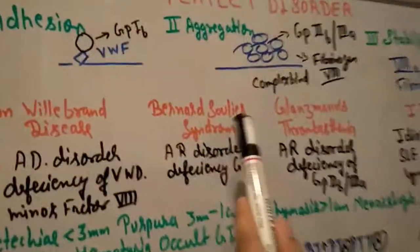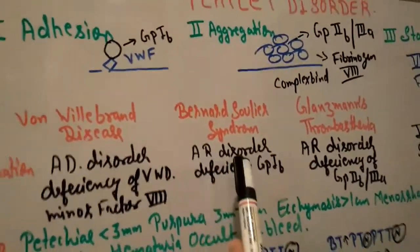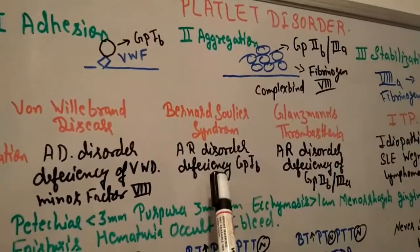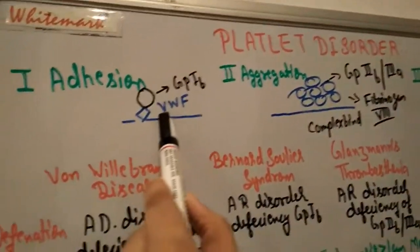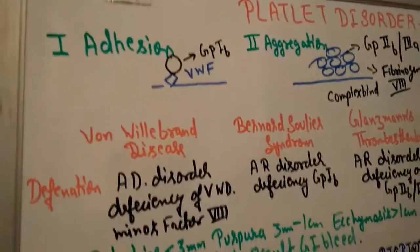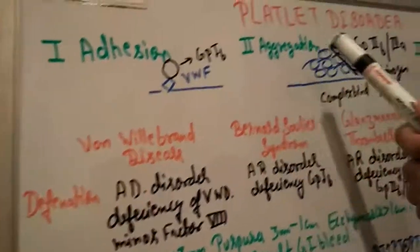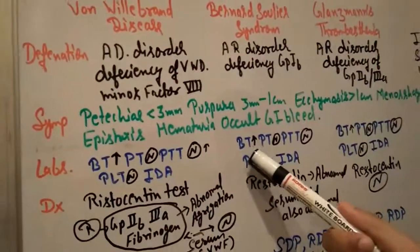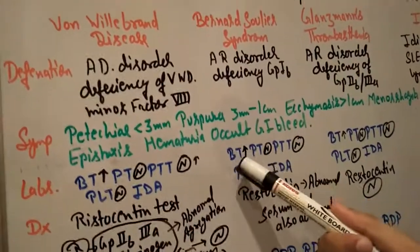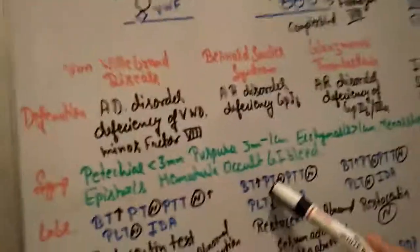In Bernard-Soulier syndrome, it's an autosomal recessive disorder. Here is deficiency of glycoprotein 1B. Von Willebrand factor is present, but glycoprotein 1B is deficient, so there is no aggregation and no stabilization occurs. It takes time, so bleeding time increases because blood is not able to clot easily.